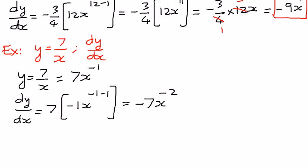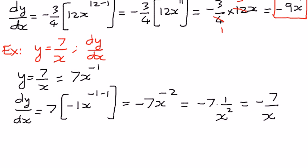That is one way of representing the answer. We can also simplify and express x to the power of negative 2 as a positive exponent by bringing it to the denominator: negative 7 times 1 over x to the power of positive 2. So we can write this as negative 7 over x squared. This is where we want to leave it — this is our answer.